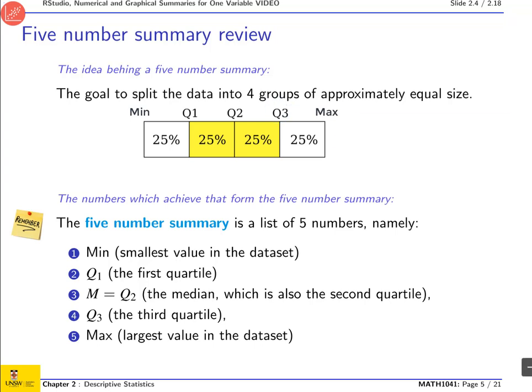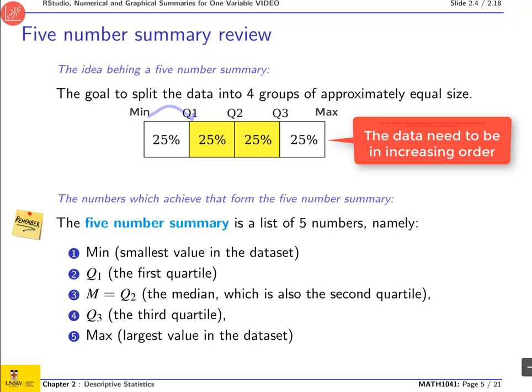Then there's the third quartile where three quarters of the data are below it. And finally, the maximum value. So this list of five numbers is what we call a five-number summary.